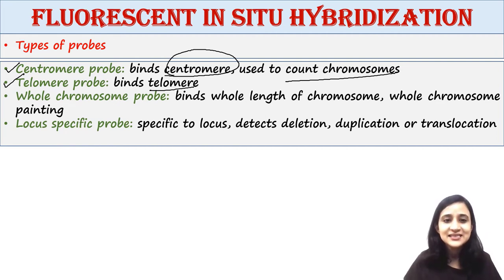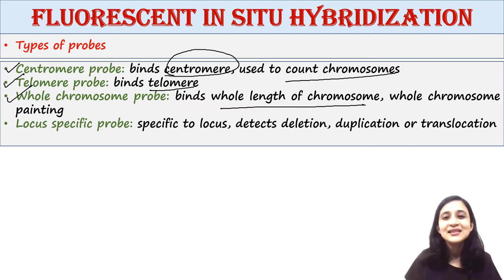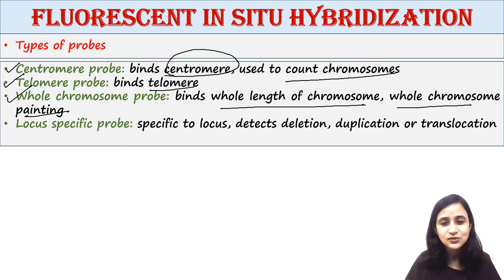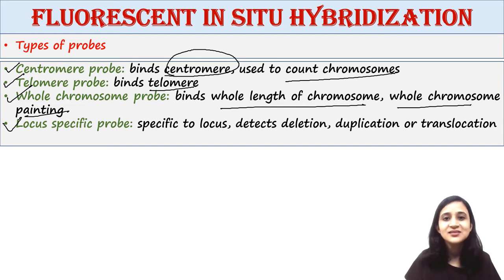The next type is the telomere probe, which binds only to the telomere regions — the ends of chromosomes. Next is the whole chromosome probe. These probes bind to the whole length of a chromosome and are used to count the number of chromosomes. This is also called whole chromosome painting, because the probe hybridizes with the entire chromosome, making it appear colorful under the fluorescent microscope.